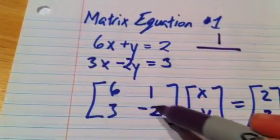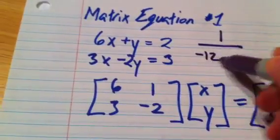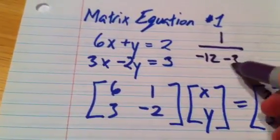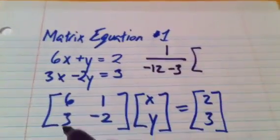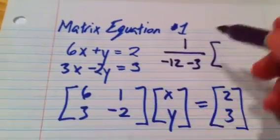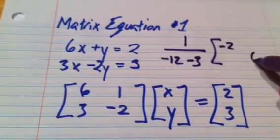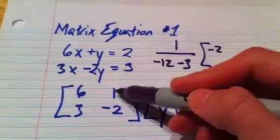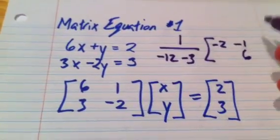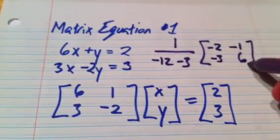So the determinant of this guy is negative 12 minus 3, and then switch the places of those, so negative 2, 6, and switch the signs of those, so negative 1, negative 3.